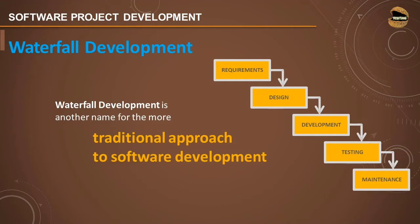Waterfall development involved a sequence of phases which helped create a product and deliver it to a certain extent. The waterfall development included certain standard phases — requirements, design, development, testing and maintenance — which were supposed to be completed at their desired positions before moving to the next stage. As you see in the diagram, it was a waterfall: moving from one stage to another, and you cannot go back. The permission to revisit a previous stage was not actually allowed.